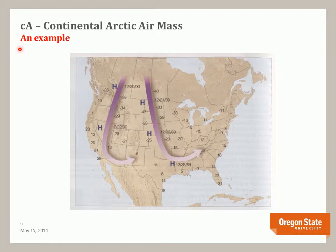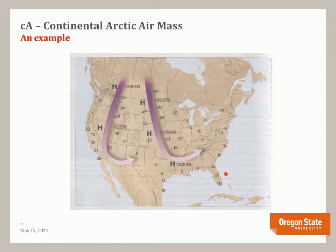Let's first look at a couple of examples of continental Arctic air masses. Extremely cold and stable conditions are associated with continental Arctic air masses. This map shows the path of two such masses — one in December of 1990 and one in December of 1989. Note the location of all the high pressure zones, and note that sub-freezing temperatures are found all the way down into Florida — a really cold air mass.